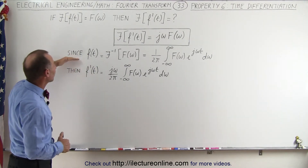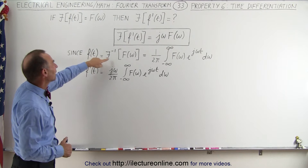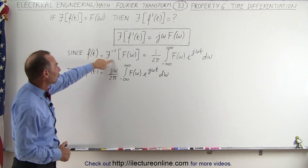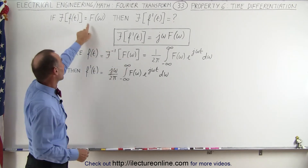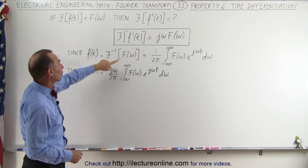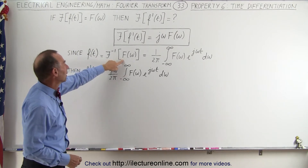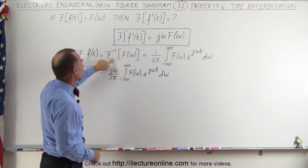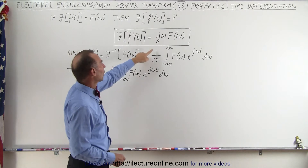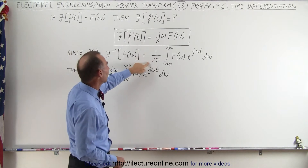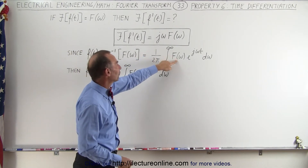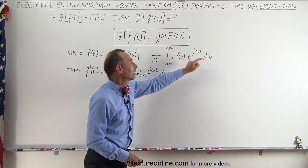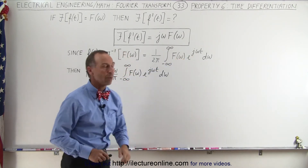Starting from the beginning, we can say that f of t is equal to the inverse transform of the function in the frequency domain. The inverse Fourier transform gives us 1 over 2 pi times the integral from minus infinity to infinity of the function times e to the j omega t times d omega.